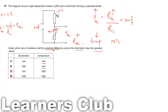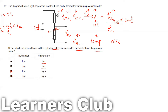If the PD across the thermistor is high, then the PD across the LDR will be low, since V_LDR + V_thermistor = EMF. Low voltage across the LDR means low LDR resistance. For an LDR, resistance is inversely proportional to light intensity, so low resistance means high light intensity. Therefore the answer is option B.